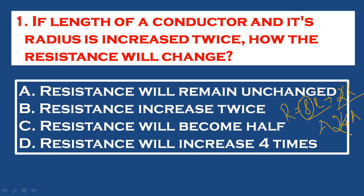That means the whole resistance becomes half. If the radius is doubled, the area becomes 4 times. So the new resistance is half the original. The answer is confirmed correct.